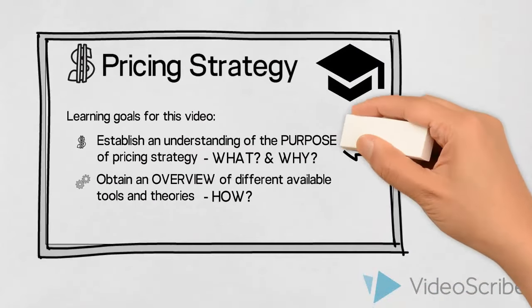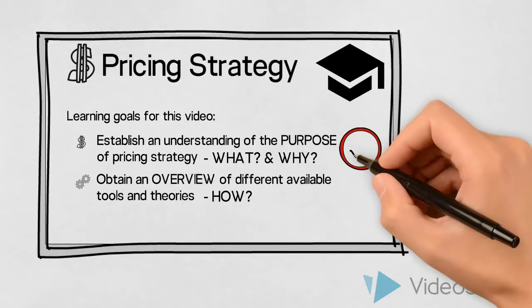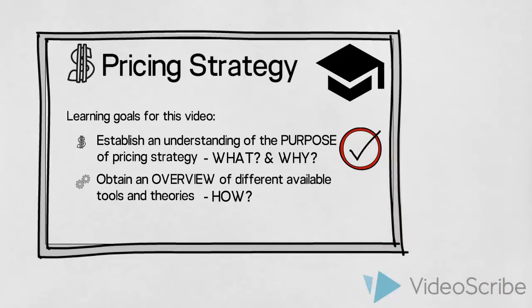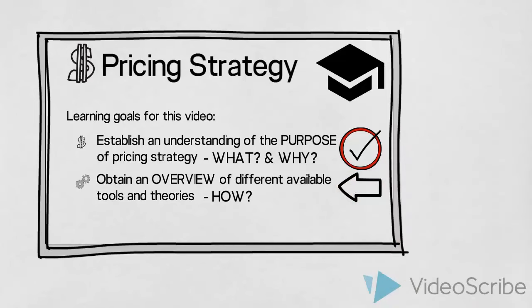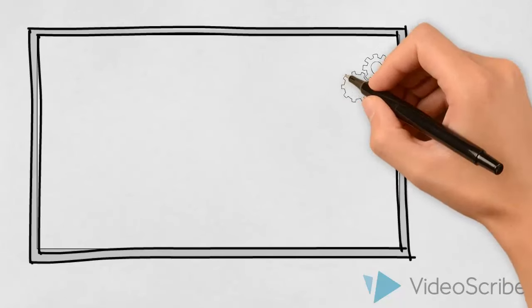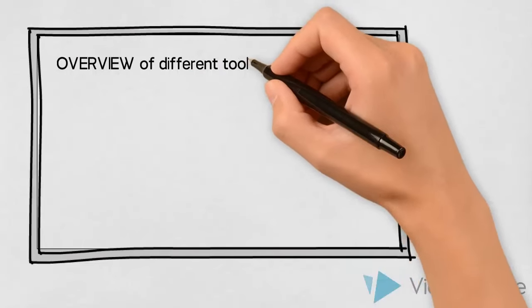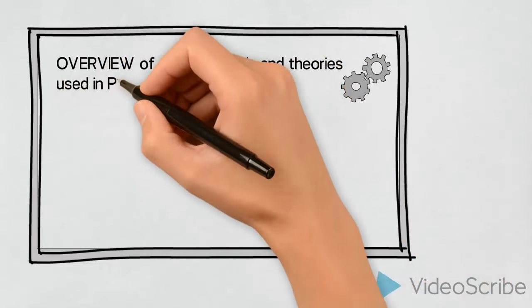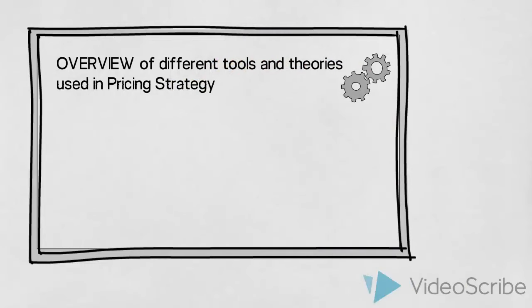We have now established the purpose of pricing strategy — what it is and why we need it. We have established that there are many factors which we need to look at before we can decide on the best price for our product or service. As marketers, we have some different tools and theories we can use to guide us when determining the price. These will not be described in detail in this video, but let us introduce an overview of some of the tools we could use.